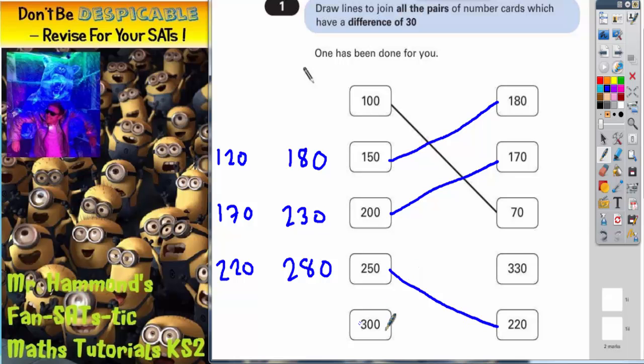And there's only one more left. 300 is going to have to join here. That's a nice easy one anyway. So if you add 30 onto 300, you get 330. So that's the difference of 30.